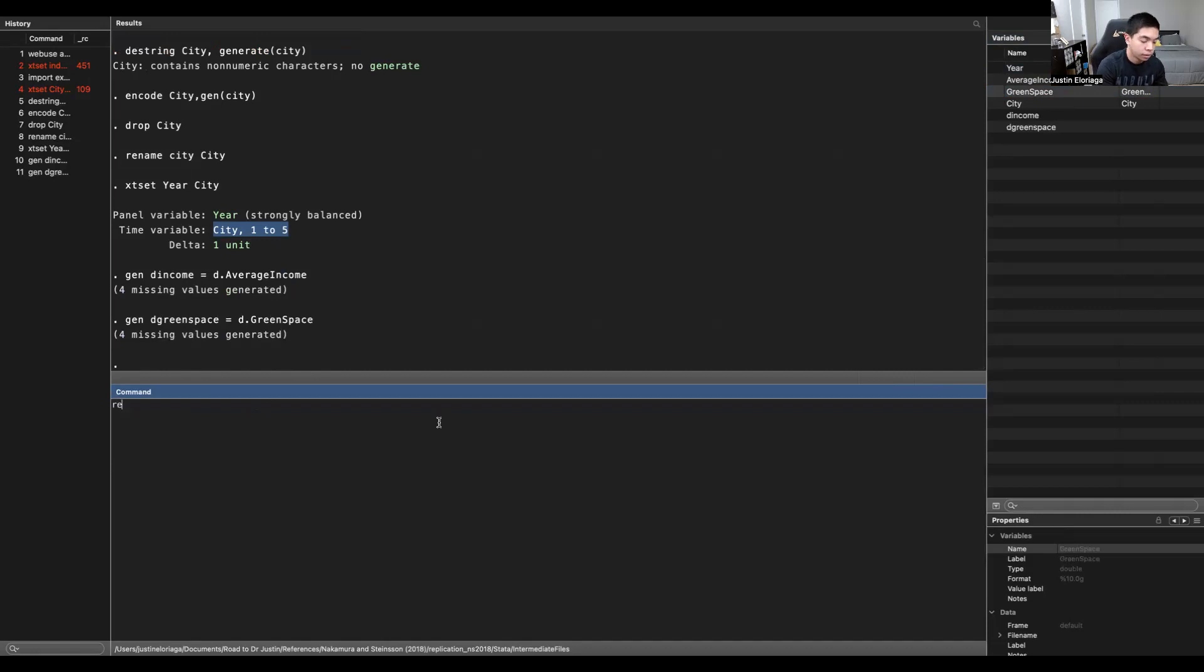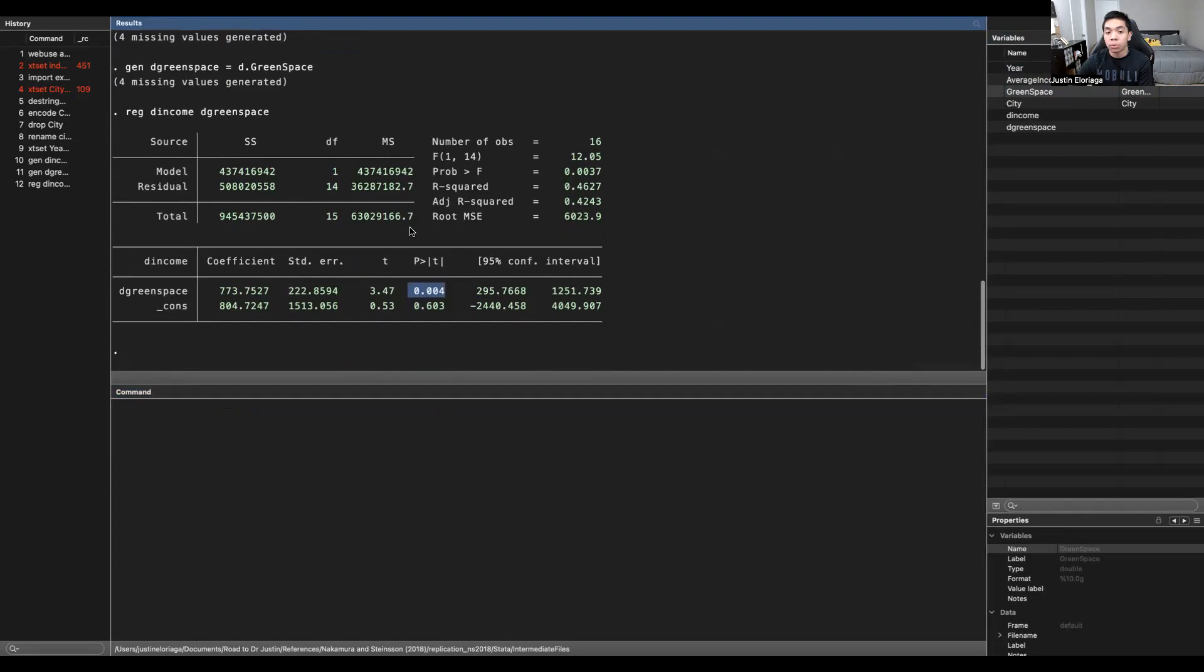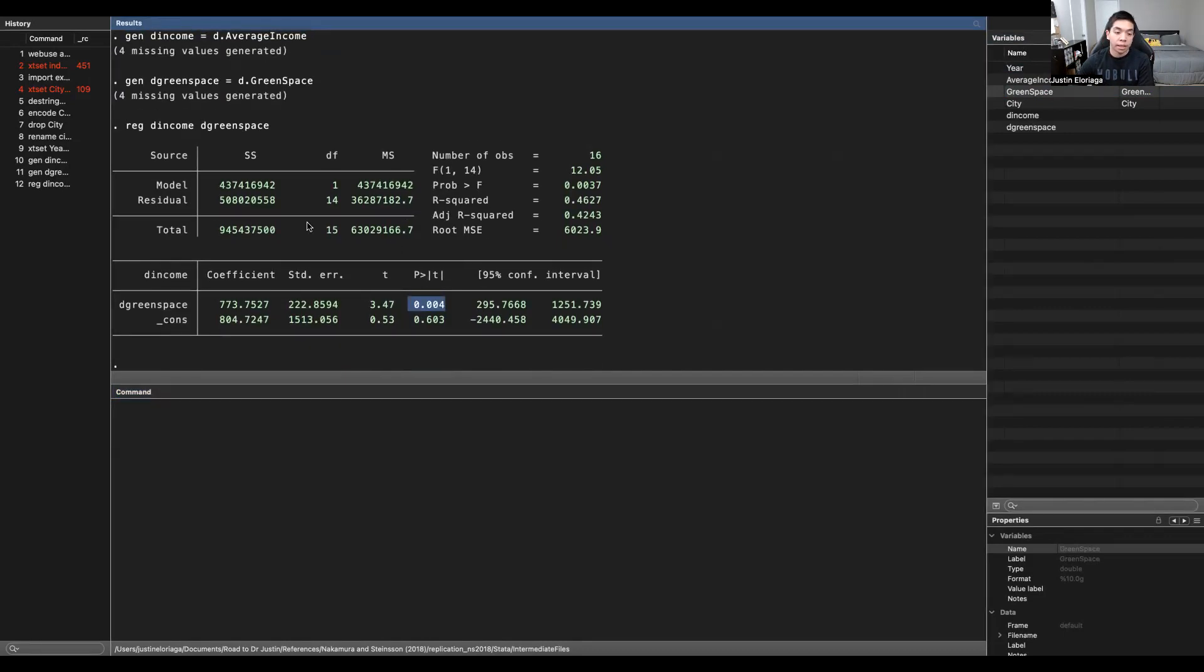Then running the first differences model is effectively an OLS, and then we just do a regression between D_income and D_greenspace, and we get the following results. We see that in this particular model, higher green space, a larger green space would generally yield a positive relationship with income, and a statistically significant one. So that's basically how to do a first differences model in Stata.